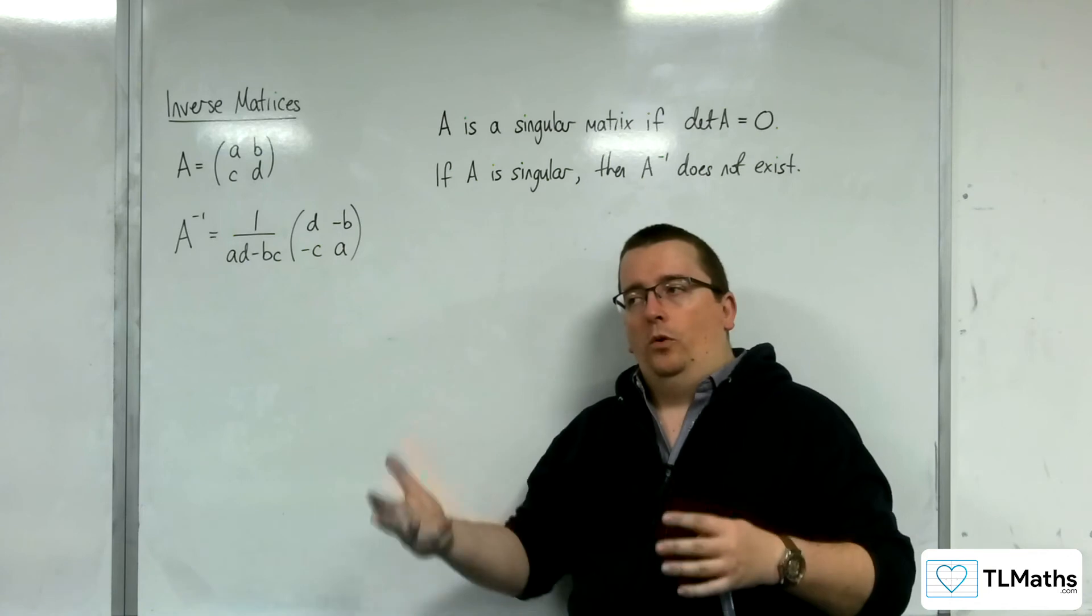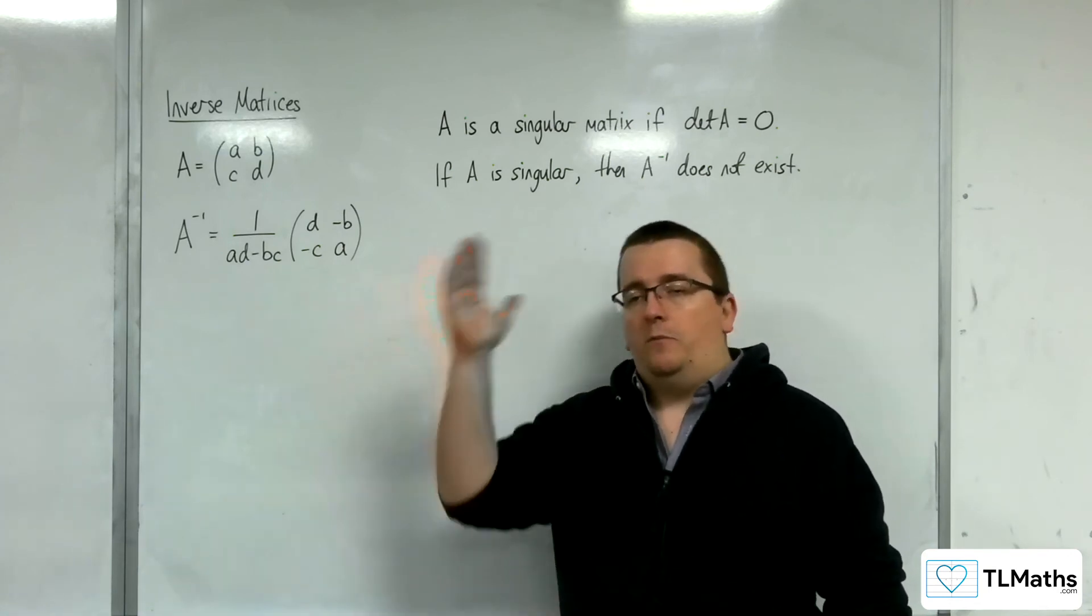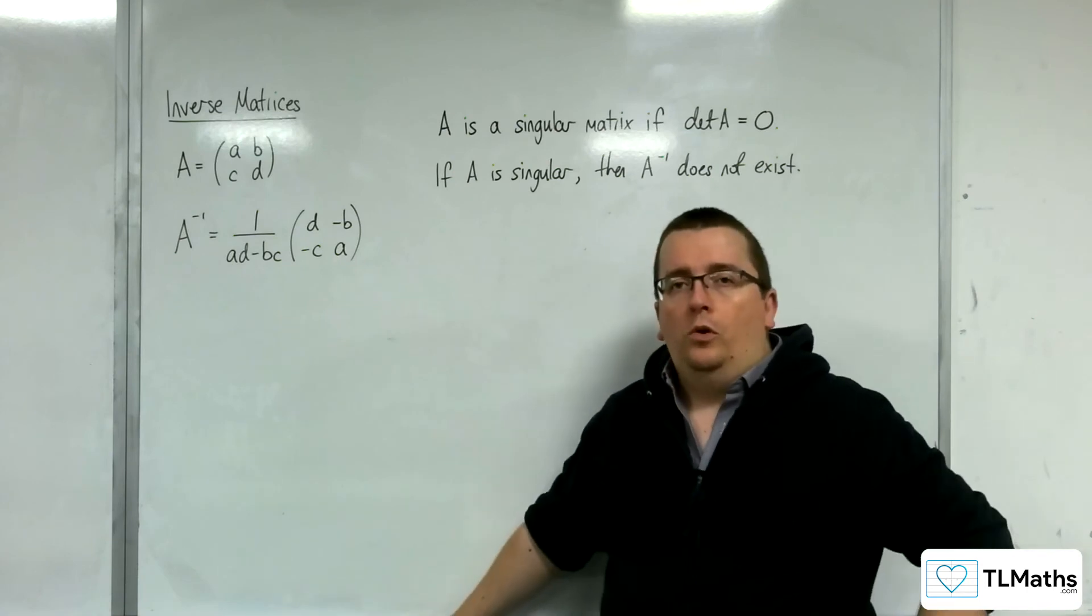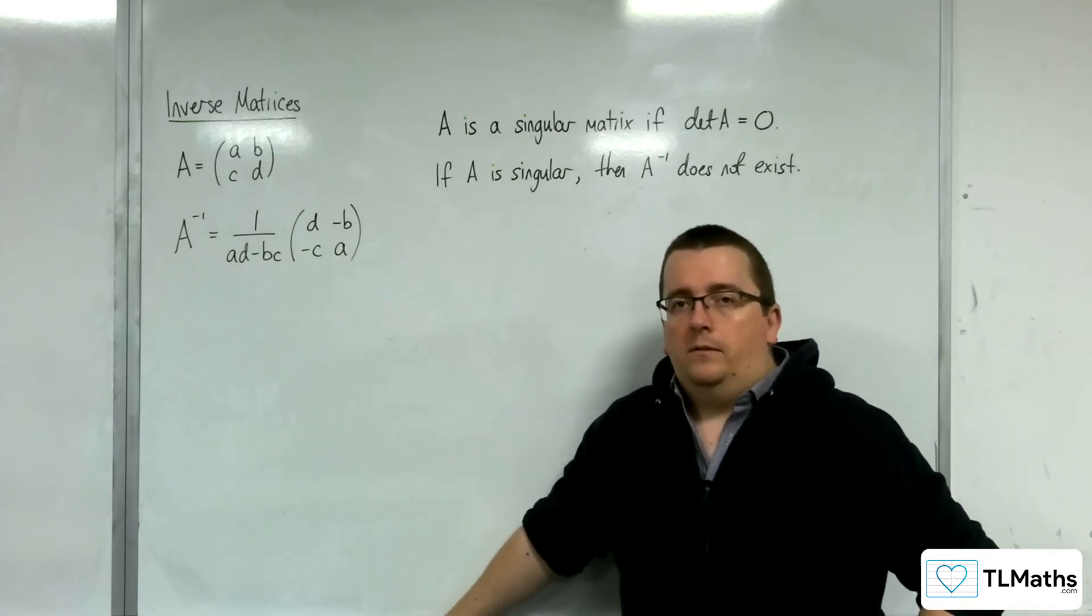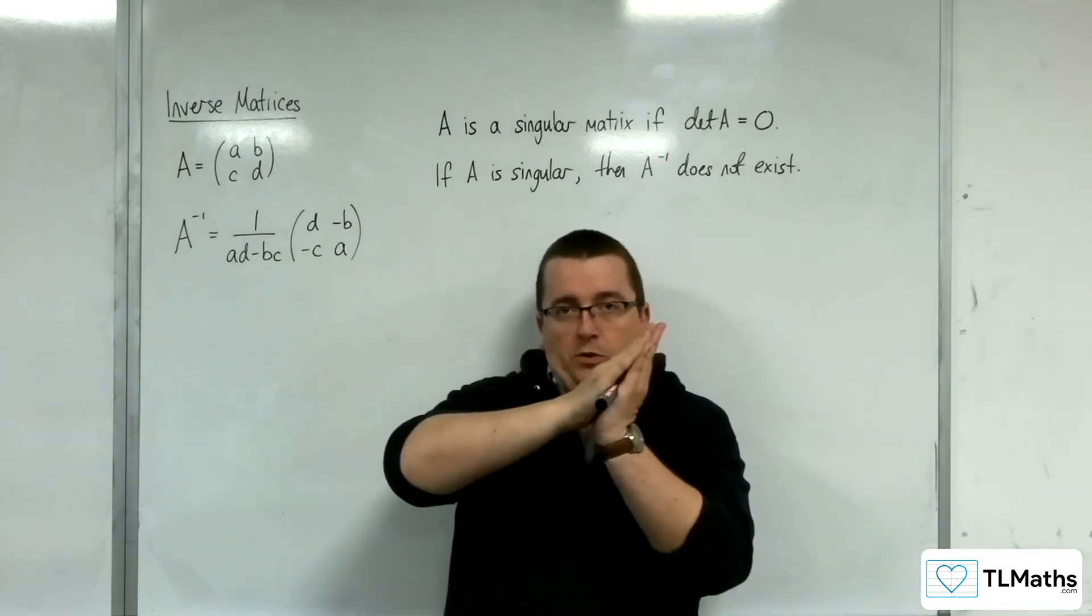If the determinant is 0, then we found that all of the points in the shape, or on the shape, would be mapped to a straight line. So, our shape would be squashed down into a straight line.